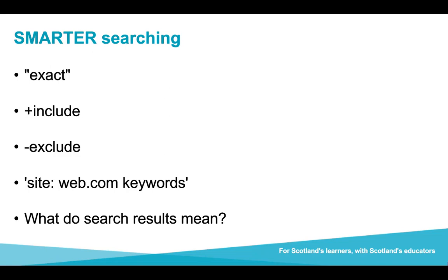You can also use the phrase 'site:' followed by the domain and extension — for example, site:web.com followed by keywords like 'Lionel Messi first age of playing football' and it would only search that website for those keywords, helping with another level of filtering. A really key part to explore and teach learners is what search results mean: are they aware that the first results returned on a search engine like Google are adverts that are paid for? They're not necessarily the most reputable or reliable sources, and just because something is returned in a search result doesn't make it more reliable or reputable.